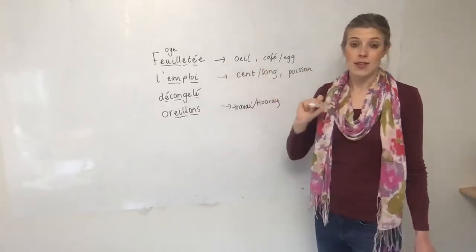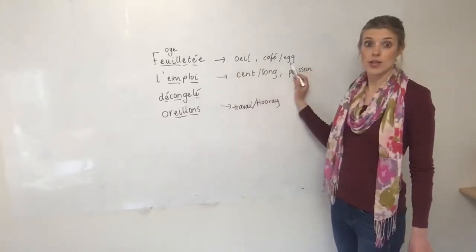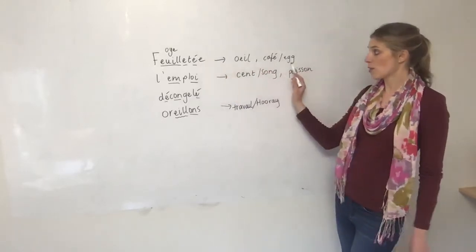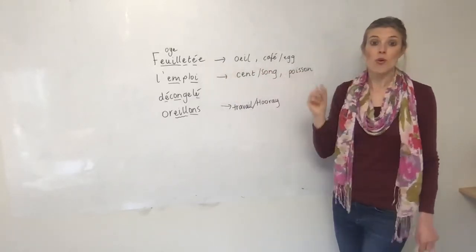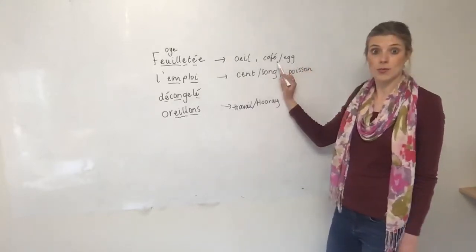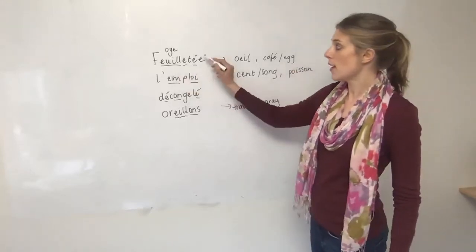Then you've got the E accent and that makes E, E for egg. So on one side of the sound chart you'll see that this E accent is with the image of an egg, or on the other side of the sound chart, the French side, you'll see that it's accompanied with café.